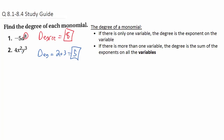One thing to notice is that we're looking at the exponent only on the variables. Technically there is an exponent of 1 on the constant 4, but that is not one of the degrees we count.